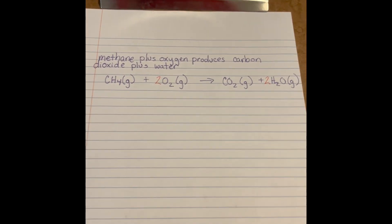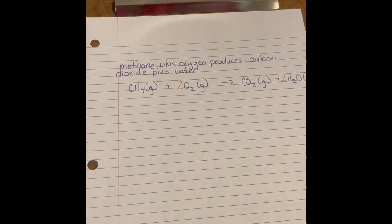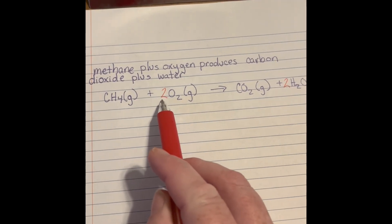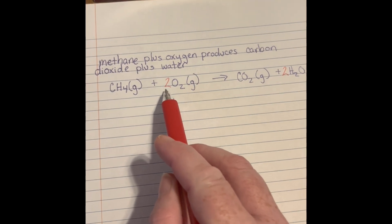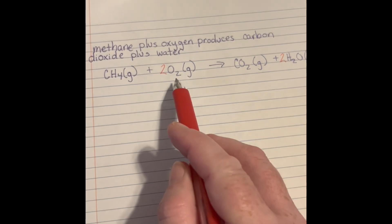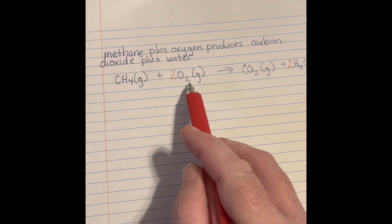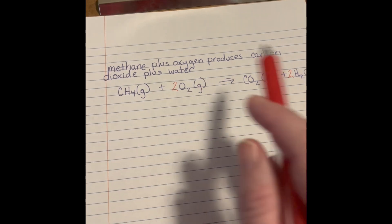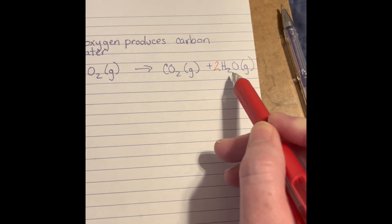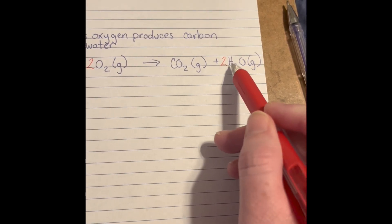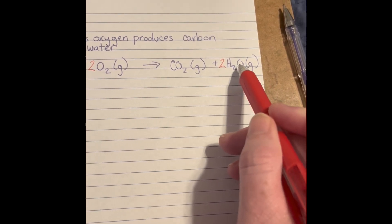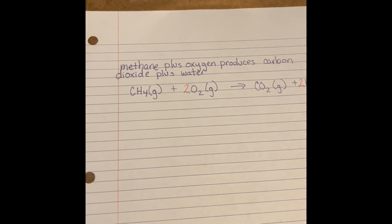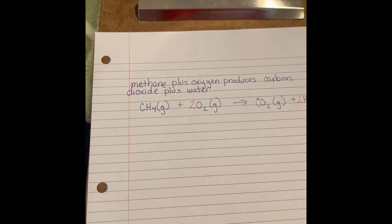Balanced chemical equations tell us what reactants and products are in a chemical reaction, the phase of each, and give us the recipe needed to make this reaction occur. Be careful not to mix up your coefficients with your subscripts. This red 2 coefficient tells you there are two molecules of oxygen. This 2 subscript down here tells you there are two atoms of oxygen. There are two hydrogen atoms in each water molecule, and the coefficient 2 tells you there are two water molecules — don't mix those up.